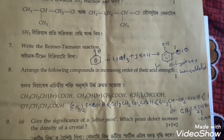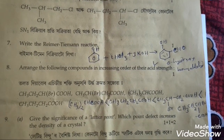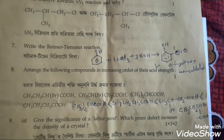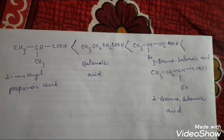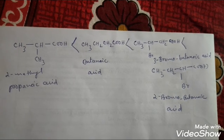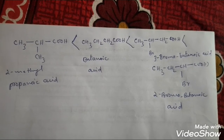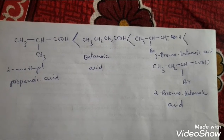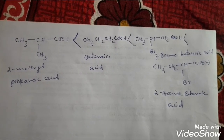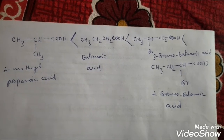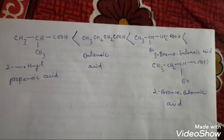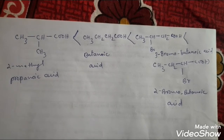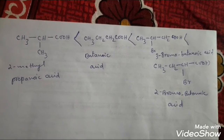Question eight is to arrange the following compounds in increasing order of their acid strength. Two-methylpropanoic acid is the least acidic, followed by butanoic acid, then 3-bromobutanoic acid, and the most acidic is 2-bromobutanoic acid.